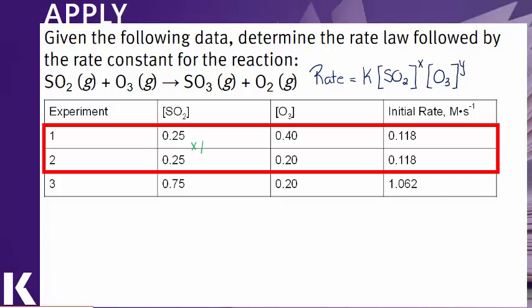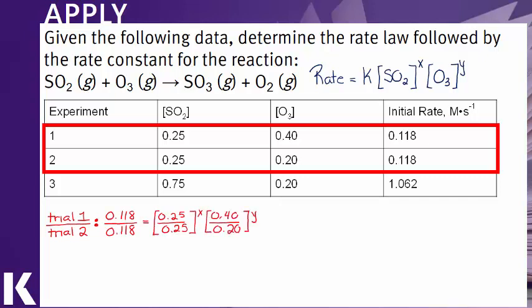So we're going to take a ratio of these two trials. We can do trial one over trial two and plug in our values. Here we have the ratio of the rates. Notice that this will just simplify out to one. We have the ratio of sulfur dioxide. Notice this also would simplify out to one.